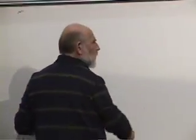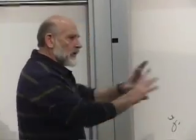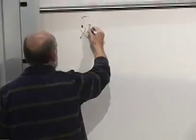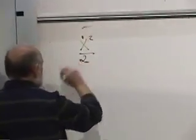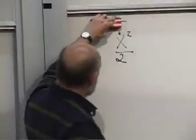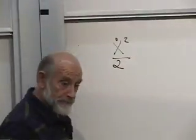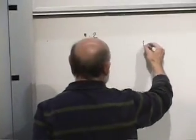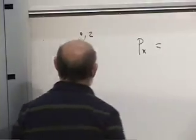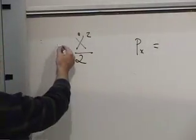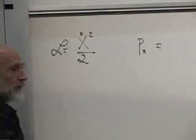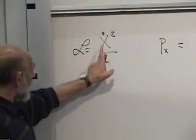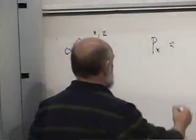Let's take the world's simplest mechanical system — a particle moving along one axis with a kinetic energy x-dot squared over two, with mass set equal to one. There's a canonical momentum p-sub-x, which equals the derivative of the Lagrangian with respect to x-dot — and that's just x-dot. The Lagrangian is x-dot squared over two.